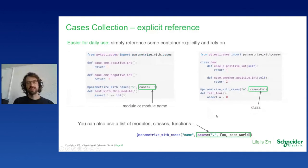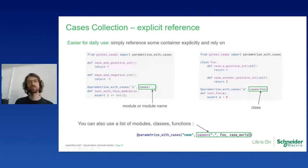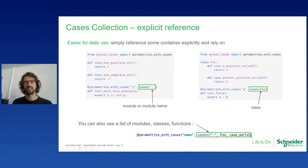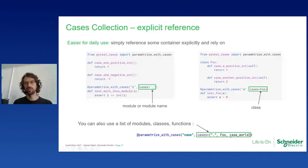More interestingly — and this was suggested by a user I want to thank — you can now also specify a module or module name to grab the cases from, and relative imports work. You can use dots to reference the current module and use cases written just before the test. You can also use a class as a namespace to contain cases, reference a class directly, and moreover grab cases from several places: modules, classes, or even individual case functions referenced directly.